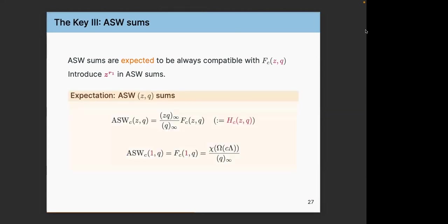We figured out that if you include a z^{r_1} factor in these sums, you get very close to the bivariate generating function of cylindric partitions, up to a certain extra factor. If you set z equal to 1 these cancel and you recover the generating function already found. This is the key object — I'll call these H-functions: a modification of the actual generating function of cylindric partitions.